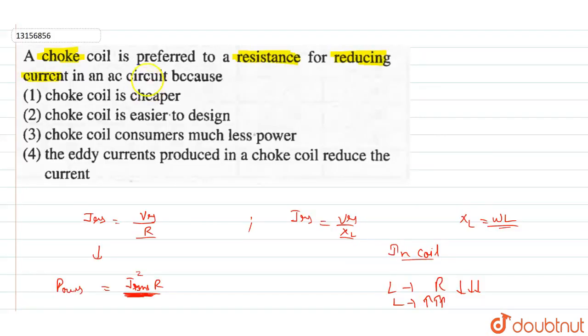So in option 3, the coil consumes much less power. Therefore it is preferred over resistance.